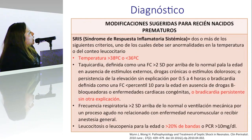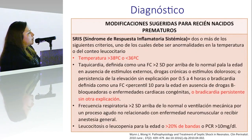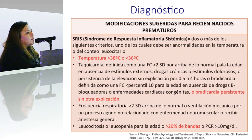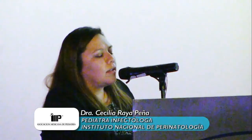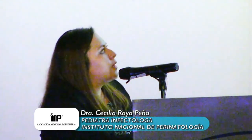En cuanto a los reactantes, también se modificó el nivel de PCR a mayor de 10 — en pacientes pediátricos es mayor de 20 — y se modificó el porcentaje de bandas. En pacientes pediátricos es mayor al 10% de bandas, mientras que en los prematuros se considera mayor al 20%, principalmente porque el porcentaje de bandas puede aumentar solo con la dificultad respiratoria o incluso con un llanto prolongado.